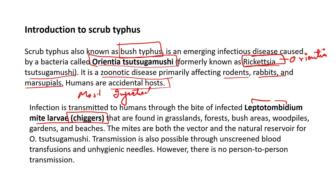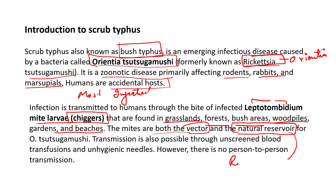During a bite, the saliva from the salivary gland of the larva is transferred into the person, causing the signs and symptoms of scrub typhus. This larva is found in grasslands, forests, bush areas, wood piles, gardens, and beaches. The mites act as both the vector and the natural reservoir. The reservoir for scrub typhus is rodents.